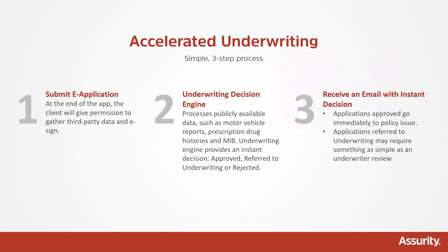Accelerated underwriting really boils down to a simple three-step process that is mostly done behind the scenes. For you, it means working with a client on an electronic application. At the end of that application, the client will give permission for us to gather third-party data and e-sign the application. The third-party data in step two that we pull can be things such as motor vehicle reports, prescription drug histories, or MIB reports. We then use this data to create a profile on the client and see if we can make an instant decision.